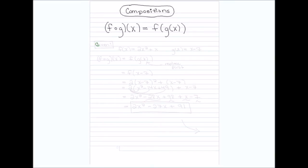Let's take a look at a function. If we're given F of X equals two X squared plus X, and G of X equals X minus seven, the directions will say: find the composition of F and G. So I'm going to rewrite this as F of G of X.